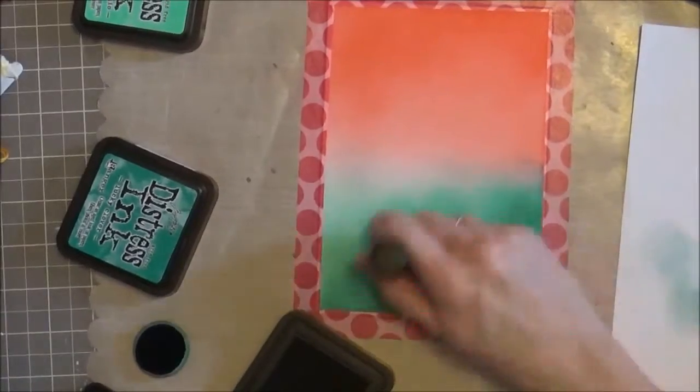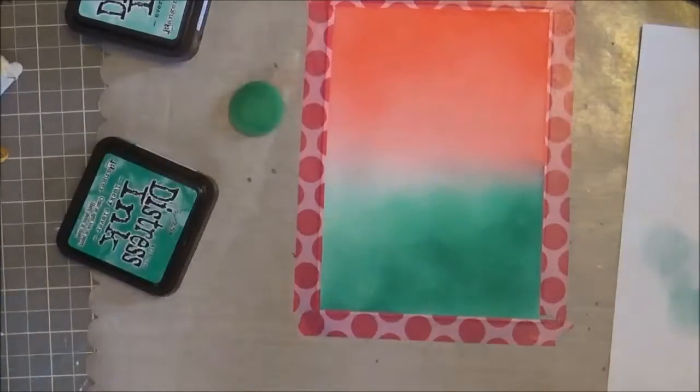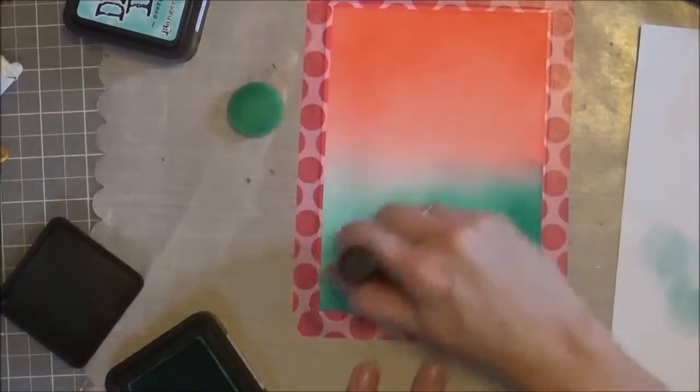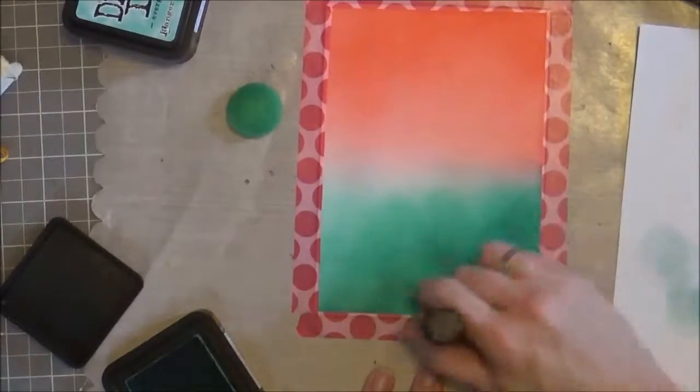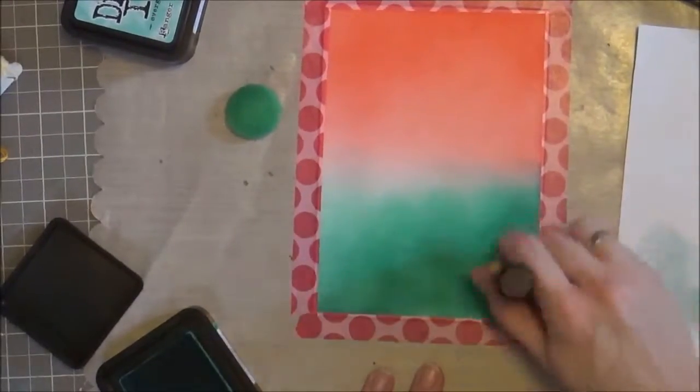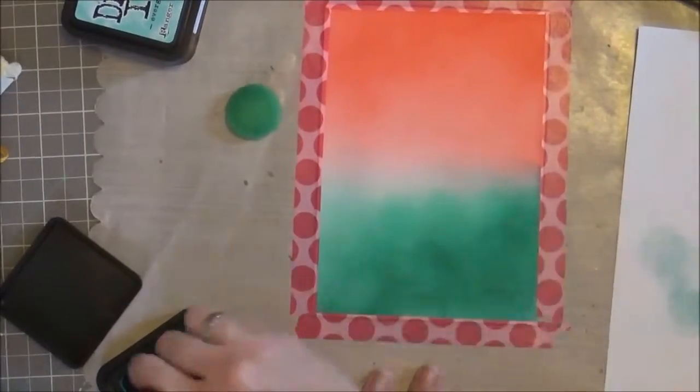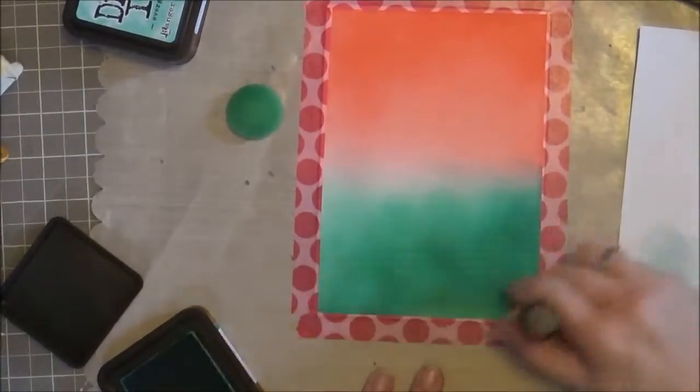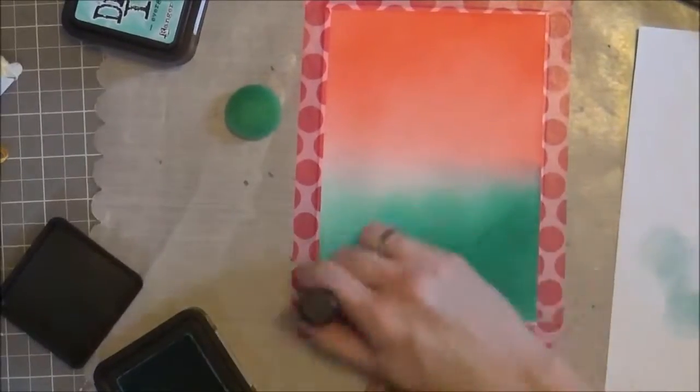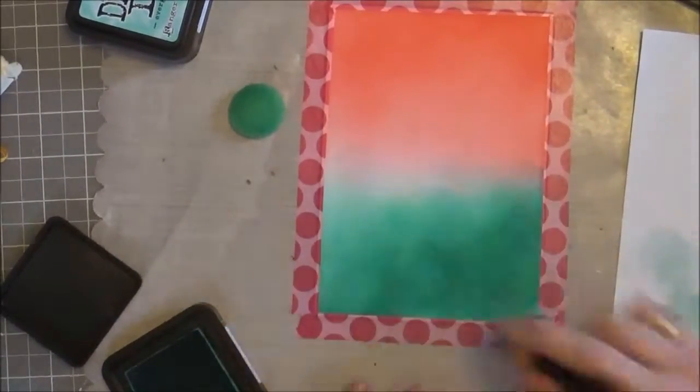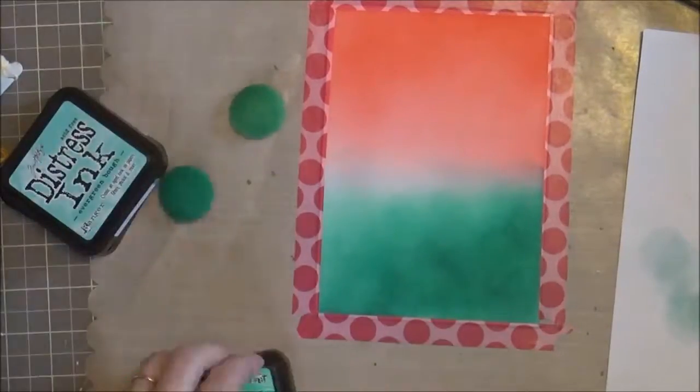You can see how continuing to work with it and getting that saturation level helps smooth it out. If I were going to do this as a solid background and not put the overlay over it, I might have done this again. But because only a small portion is going to show through, even though it's a little bit blotchy, it's not bad. It's certainly less noticeable with the overlay.